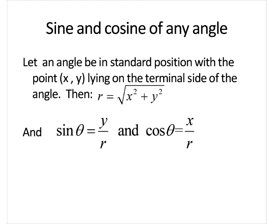So some definitions to start us out with. An angle in standard position with point (x, y) lying on the terminal side. R is going to equal the square root of x squared plus y squared. So sine theta will be y over r, and cosine theta will be x over r.